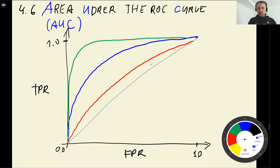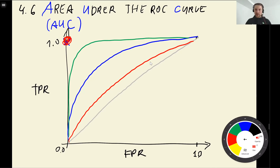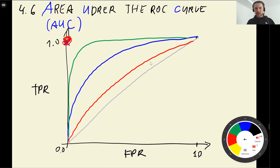We have this ROC curve, and the ideal point is when the true positive rate is 1 (100%) and the false positive rate is 0. We want to be as close as possible to this ideal point, and one way of quantifying how close we are is by measuring the area under the curve.